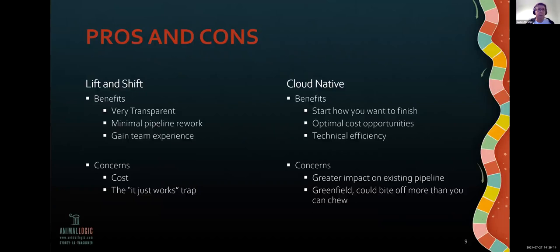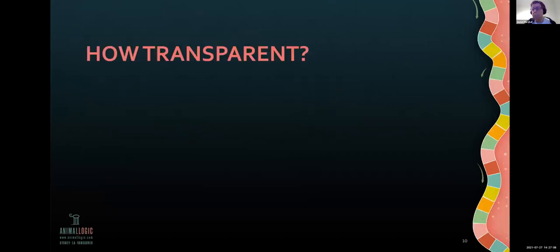In reality you'll probably land somewhere in between — some things lifted and shifted, others cloud native. Lift and shift is very transparent; you're picking up what you have and running it in the cloud, doesn't really need to change your pipeline much. But there's a concern: you may not take the best advantage of cost opportunities. And a more insidious problem — the 'it just works' trap, where you've put everything in the cloud and it runs, so you just leave it alone without optimizing.